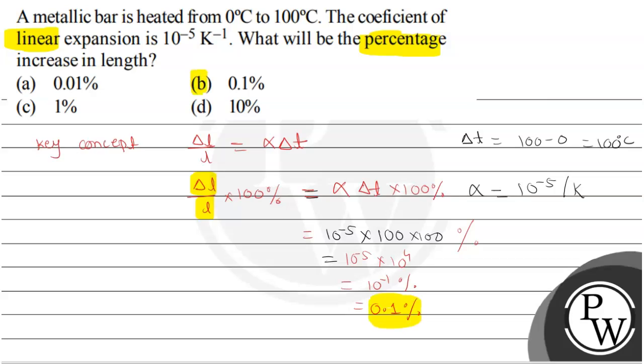0.1% is in option B. So correct choice is your option B. Hope you understand it well. Best of luck.